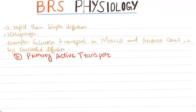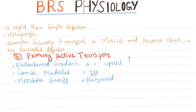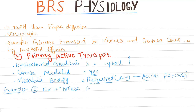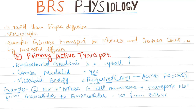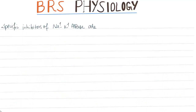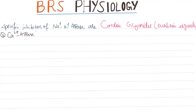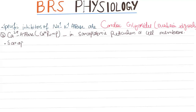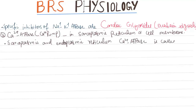Primary active transport: the electrochemical gradient is uphill and it is carrier-mediated. Metabolic energy is required in the form of ATP, making it an active process. Examples include the sodium-potassium ATPase pump in the cell membrane, which transports sodium from intracellular to extracellular and potassium from extracellular to intracellular compartment, both against their electrochemical gradients. Specific inhibitors include cardiac glycosides like ouabain. Calcium ATPase pump in the sarcoplasmic reticulum or cell membrane — the SR/ER calcium ATPase is called SERCA.